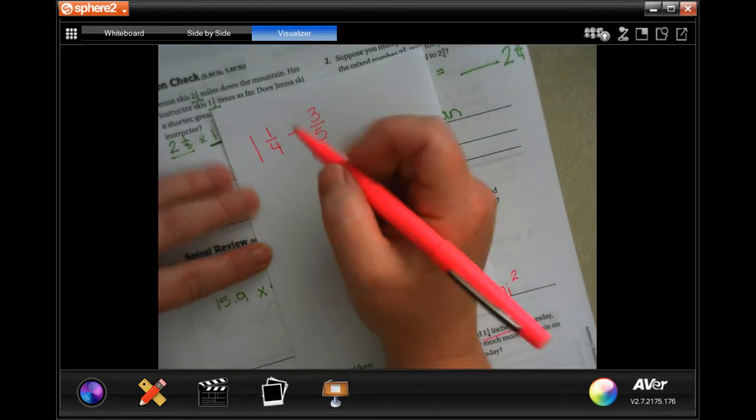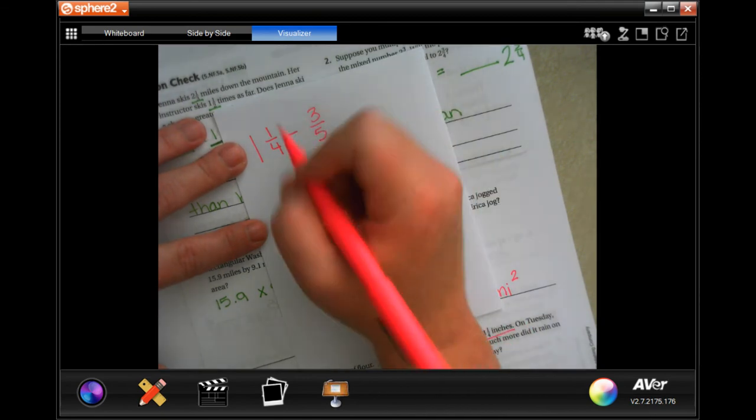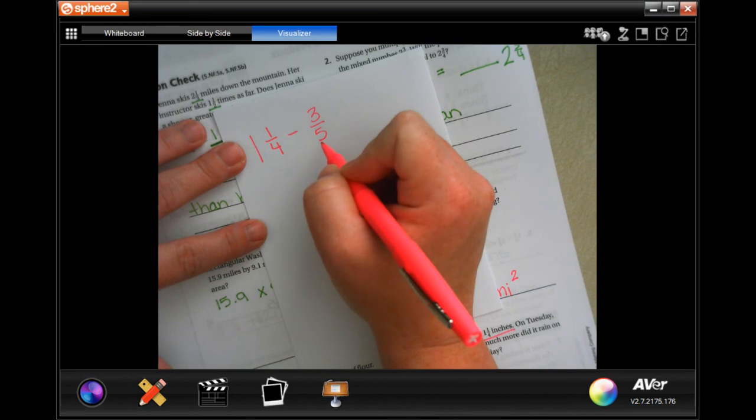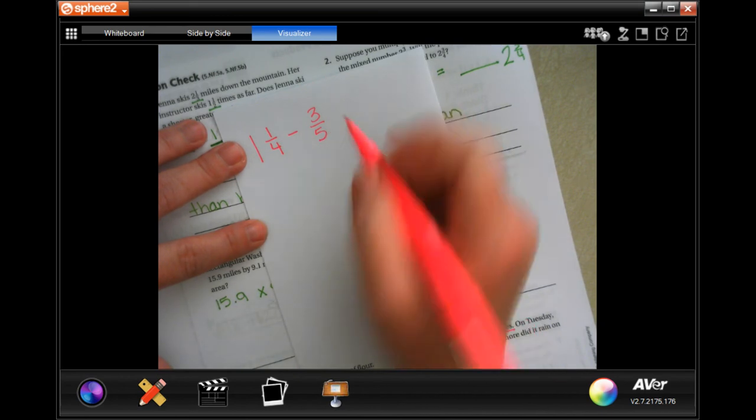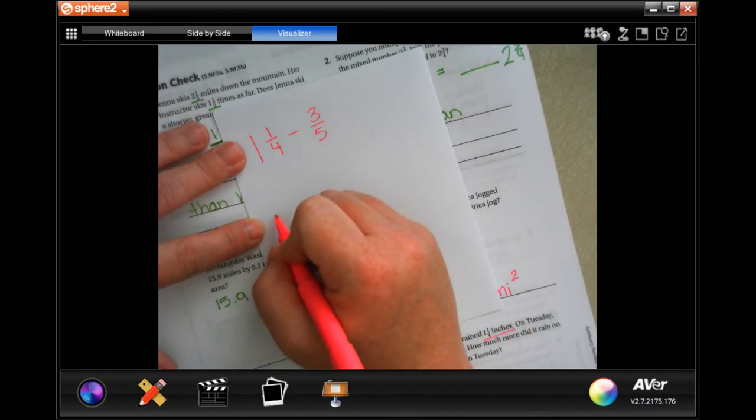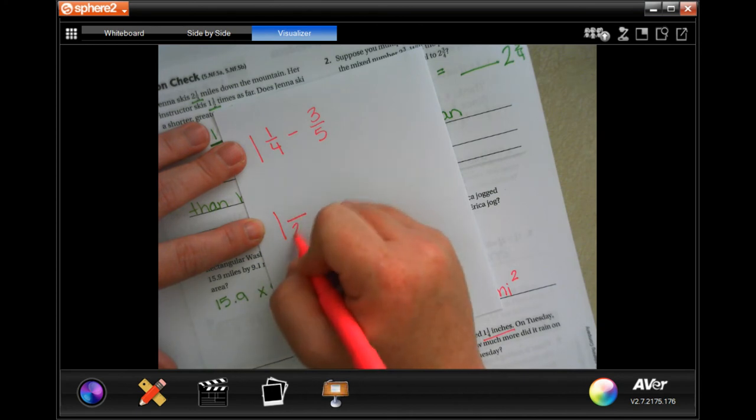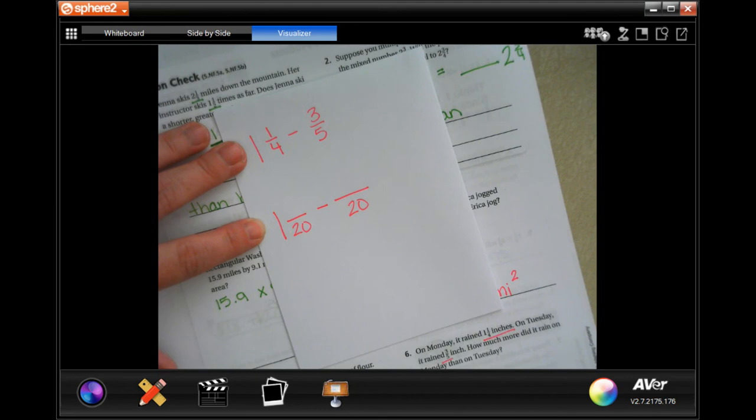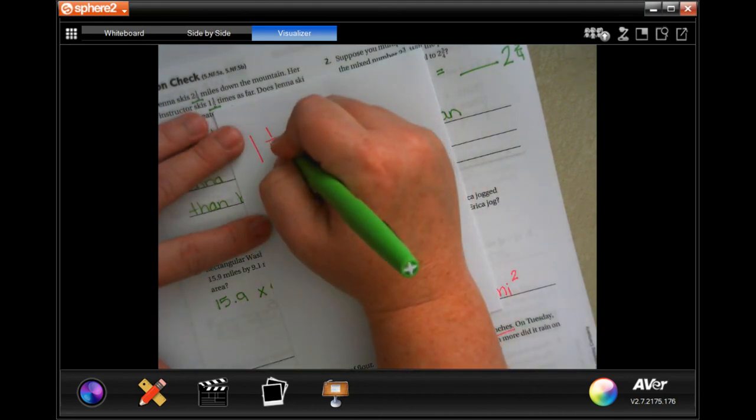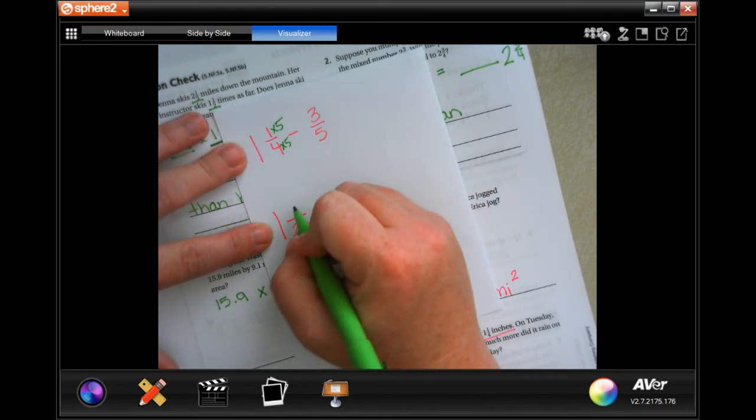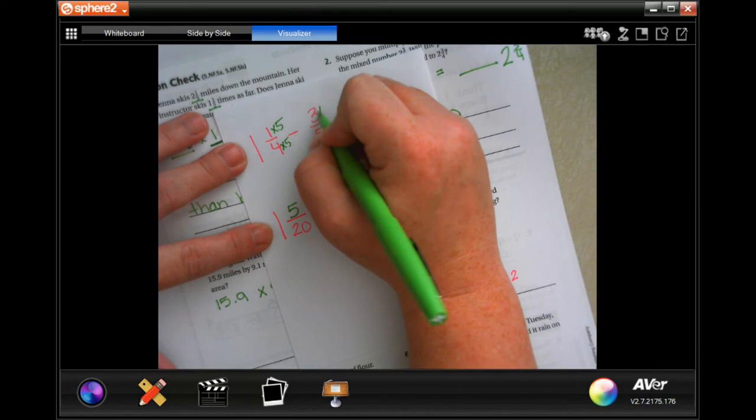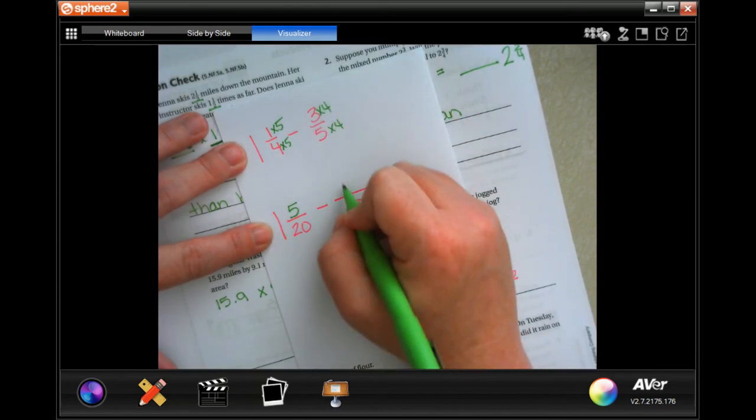I'm going to need first, I'm just going to go ahead and find the common denominator which between four and five, that's 20. So, I'm still going to have one, 20 minus 20. So, now, I had to multiply the four by five, I'm going to multiply the top by five, I'm going to have five, I had to multiply this by four, multiply this by four, so that's 12.